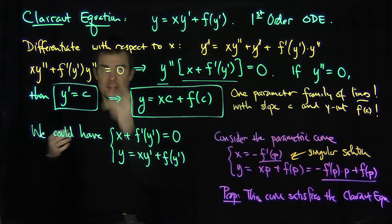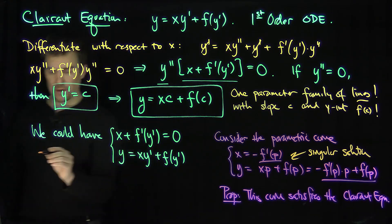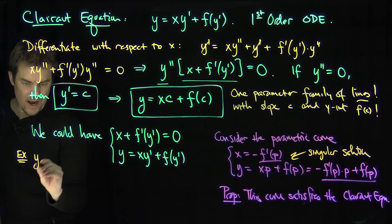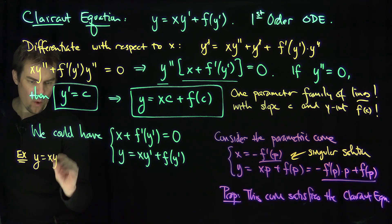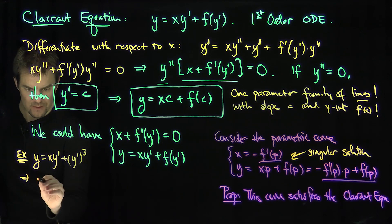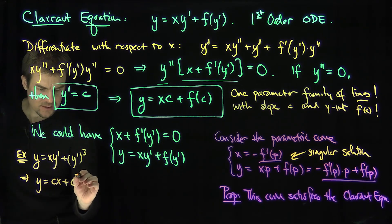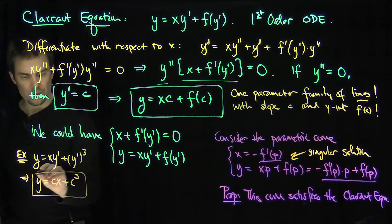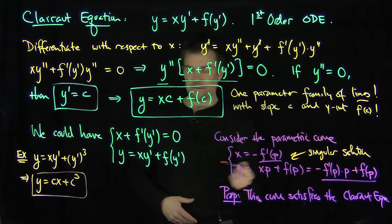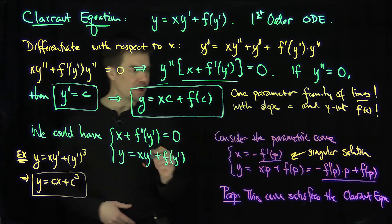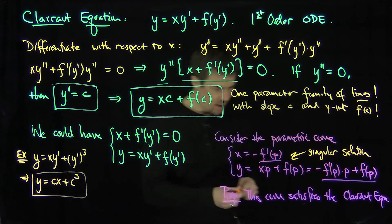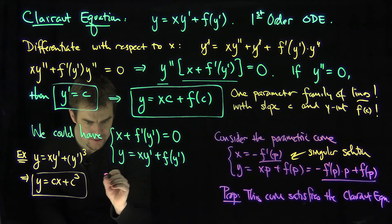For example, if I give a Clairaut equation, it's straightforward to find the one-parameter family. Consider the equation y equals xy' plus y'^3. The general solution is y equals cx plus c^3. Here f of p equals p^3, so let's find the singular solution parametric curve.